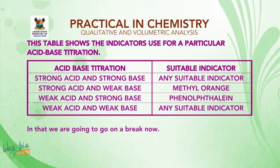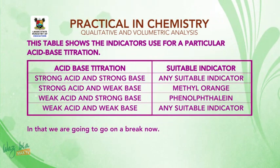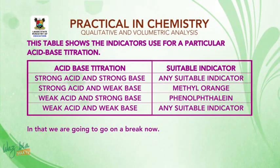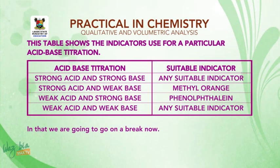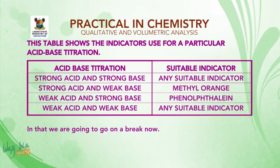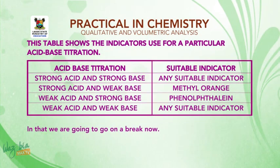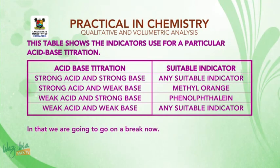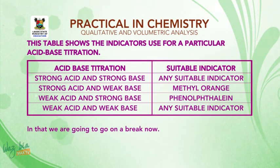For acid-base titration: where we have a strong acid and a strong base, any suitable indicator is applicable. Where we have a strong acid and a weak base, methyl orange is the good choice of indicator. Where we have a weak acid and a strong base, phenolphthalein is the suitable indicator. Where we have a weak acid and a weak base, any suitable indicator is equally useful.